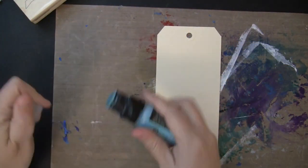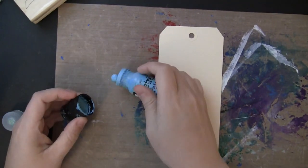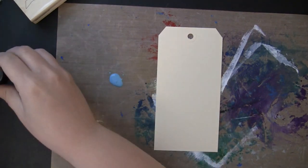To begin, I'm working on an Ink Essentials craft tag, which is 6 1⁄4 by 3 1⁄4 size, so it's pretty large, which is nice to be able to put lots of different dies on it.